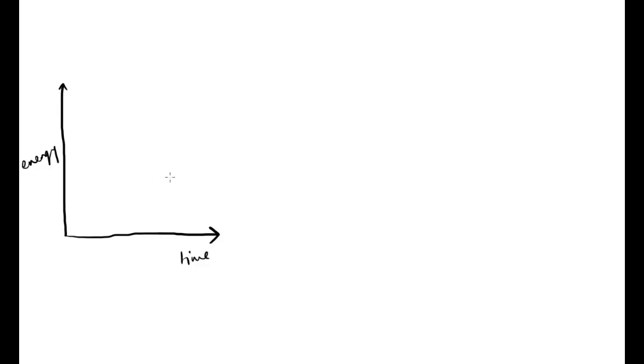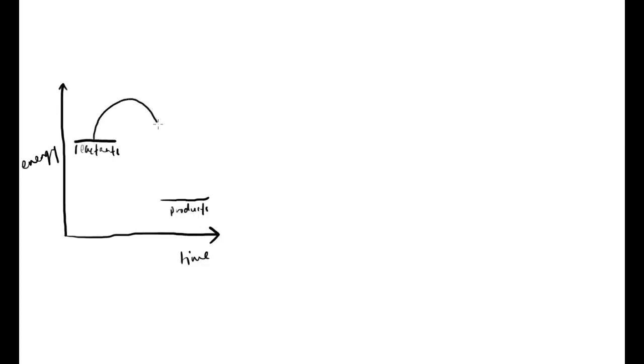If we think about an exothermic reaction where energy is lost, that energy is what we measure as heat — we can see or feel it, and we can measure it with a thermometer. So energy must be lost, meaning if the reactants are up here, when the reaction occurs our products must be at a lower energy level because energy has been released to the environment. The reactants are at a higher energy than the products, and the difference between them is the energy lost.